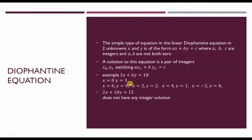Now consider 2x plus 10y equal to 15. We can observe here it does not have any integer solution. It is a Diophantine equation which has no solution.